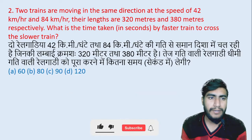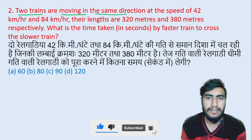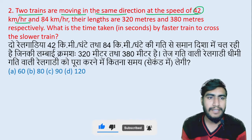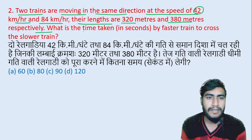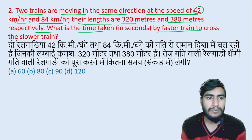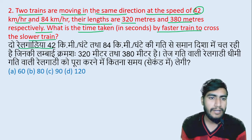Question number 2: Two trains are moving in the same direction at the speed of 42 km per hour and 84 km per hour. Their lengths are 320 meters and 380 meters respectively. What is the time taken by the faster train to cross the slower train?